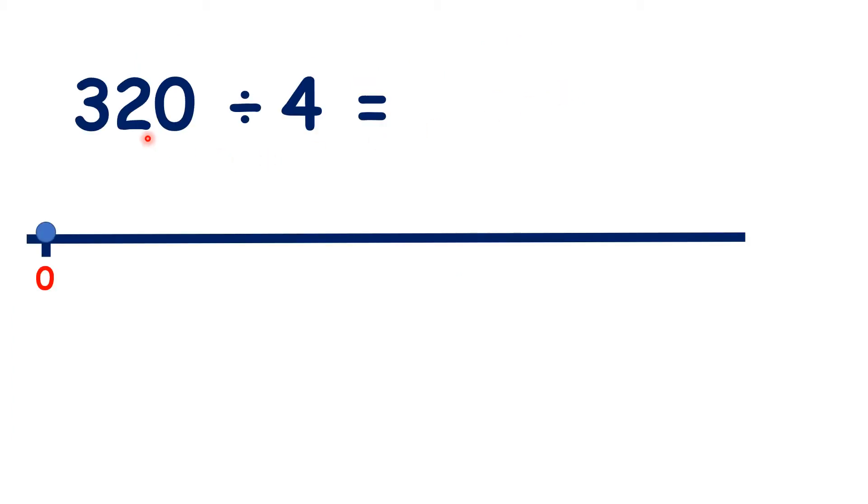So what is 320 divided by 4? Well, 10 times 4 is 40. So let's count up in steps of 10 times 4, in steps of 40.